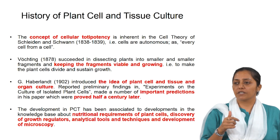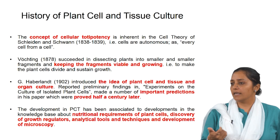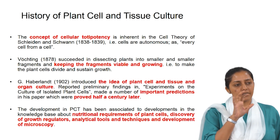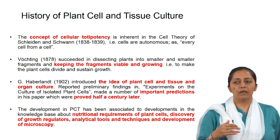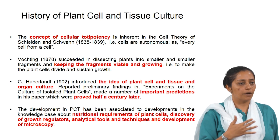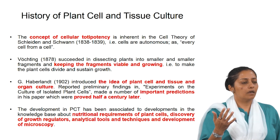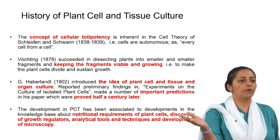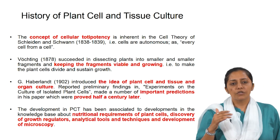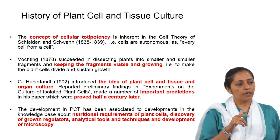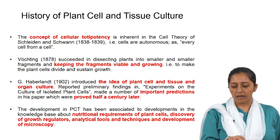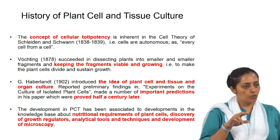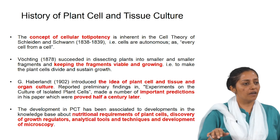For the history of plant cell cultivation, it began as the minute that cell theory came into the picture. In parallel, because of the World War going on, there were parallel discoveries happening in the US and Europe. After the cell theory concept, they also discovered cellular totipotency in plant cells.